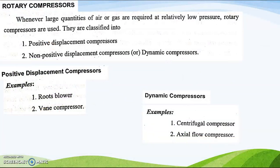Rotary compressors are mainly classified into positive displacement and non-positive displacement compressors, or dynamic compressors. Rotary compressors are used when large quantities of air or gas are required at relatively low pressure. At higher pressure, the amount of air supplied will be less compared to the rotary compressor. Reciprocating compressors are used for low quantity of air at a high pressure.